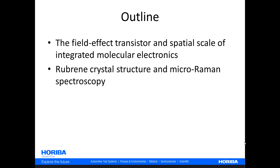This is just a short talk, and we will cover just these topics. First, an introduction, or reintroduction, of the field effect transistor, and specifically the spatial scale of integrated molecular electronics, which is large relative to that for the silicon-based or gallium-arsenide-based integrated electronics, and therefore makes it suitable for optical microscopy and optical micro-spectroscopy. And then give you an example with rubrene, which is a material, along with pentacene, that are commonly used by many scientists to try to fabricate integrated electronic circuitry with organic compounds.